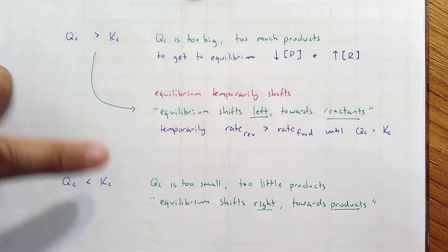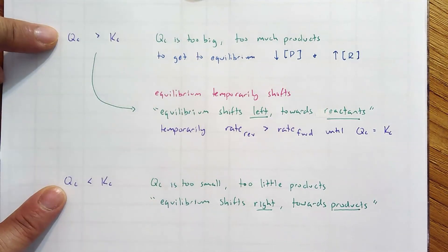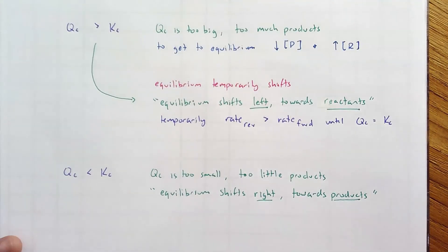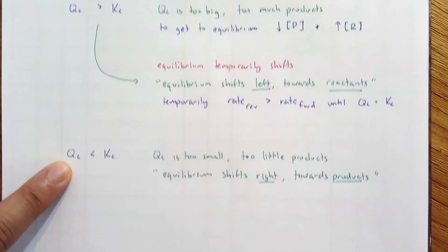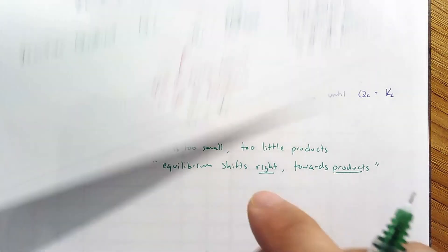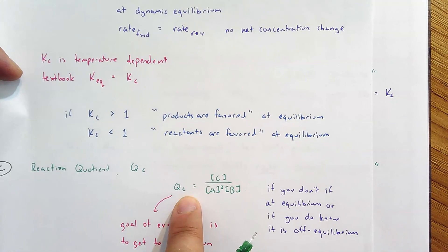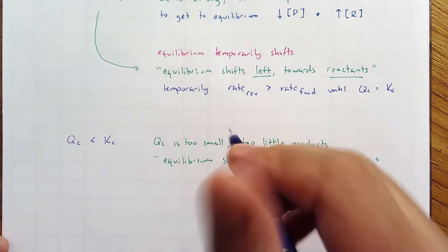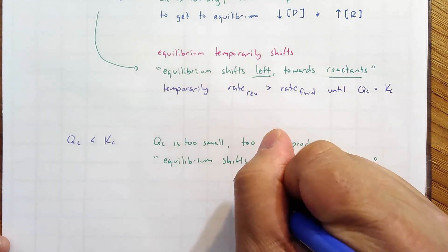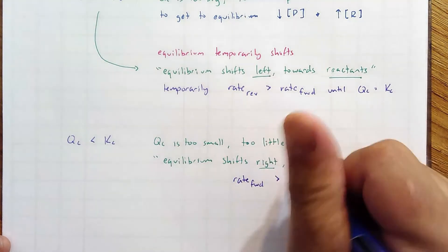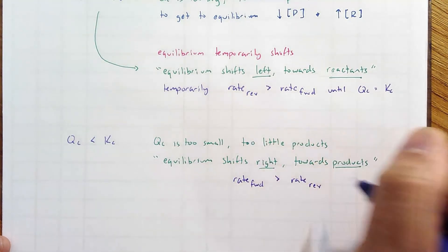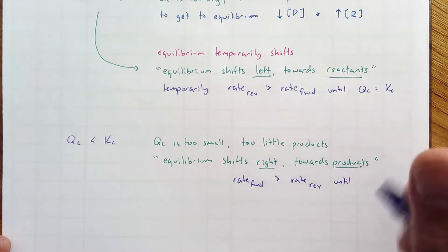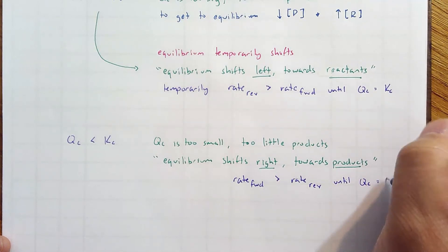A lot of students do memorize these phrases depending on Qc. But under the stress of an exam, you may forget what goes with what. You just have to think it through. If Qc is too small, you've got to make more of the numerator to get Qc ultimately to get bigger. So it shifts to the right, towards the products, and temporarily, what happens? The rate of the forward to make the products is larger than the rate of the reverse. And that, again, happens or is true until Qc equals KC.